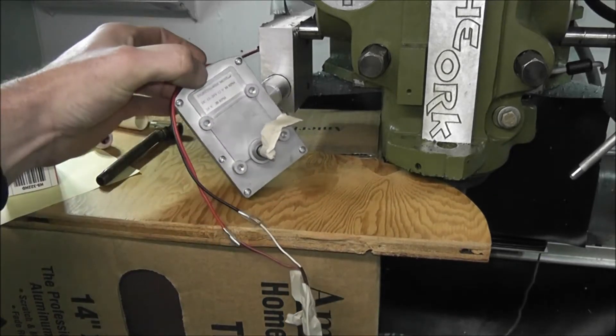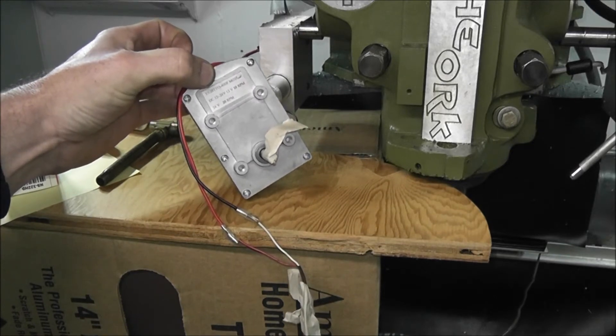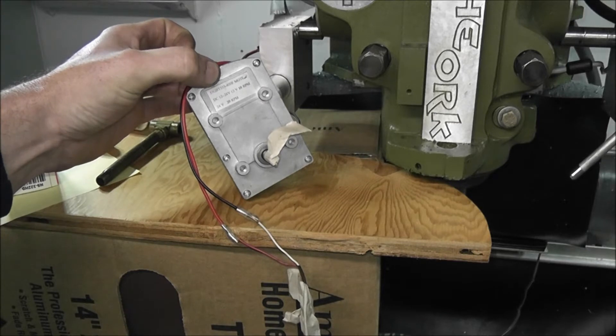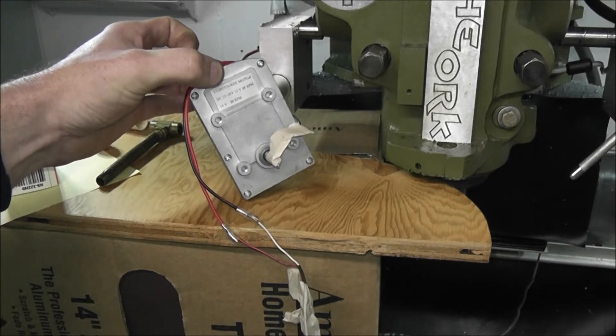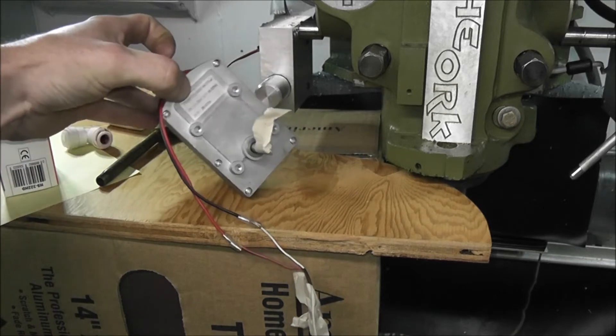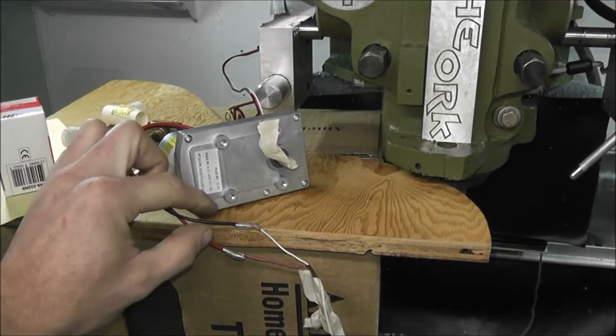You can see here it's rated for 12 to 24 volts DC. At 12 volts it runs at 10 rpms and at 24 volts it'll run at 20 rpms. It's a little slow at 12 right now. I just have it hooked up to my lighting circuit which is 12 volts.